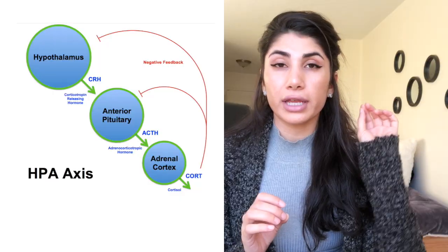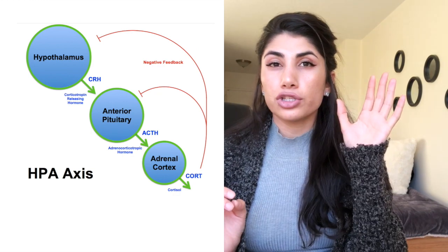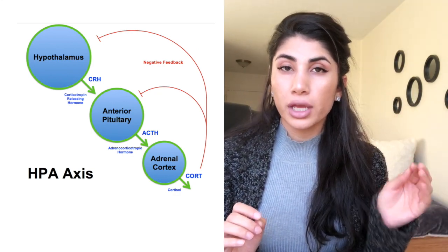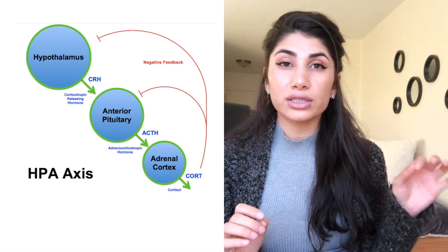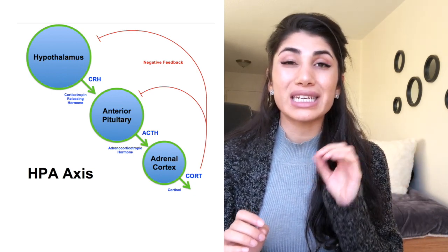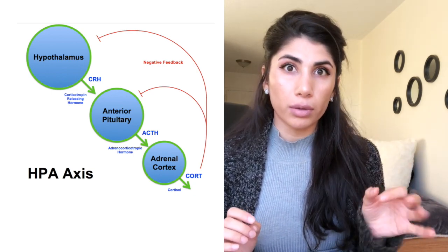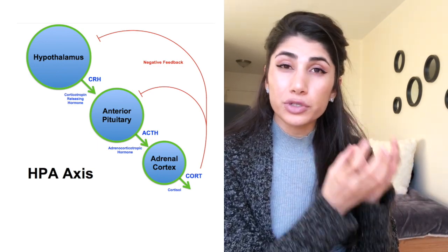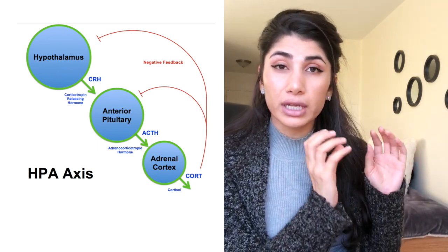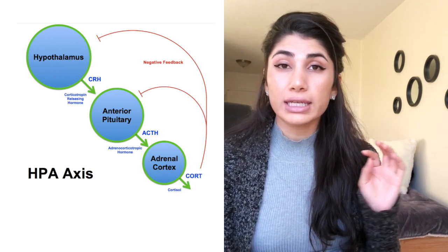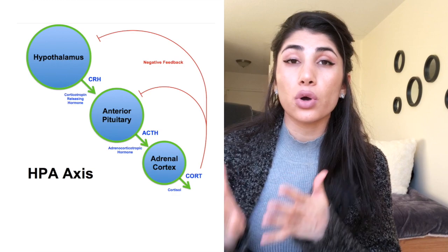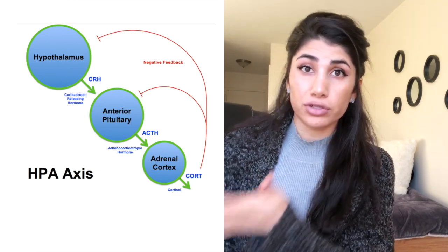Let's first talk about the hypothalamus-pituitary-adrenal axis. The hypothalamus produces CRH, which stimulates the anterior pituitary to produce ACTH. ACTH is then secreted into the bloodstream, goes to the adrenal gland, and stimulates it to produce the hormones made in the adrenal gland.